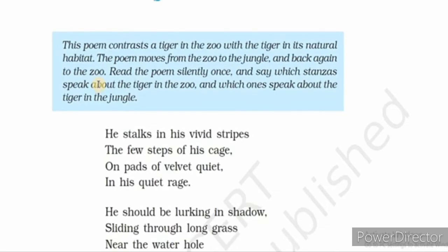Where should he reach? He can reach the water hole — the pond, the river, the lake — and he must try to stalk the plump deer. Plump means healthy. He must try to stalk the plump deer that has come to the water hole to drink water.